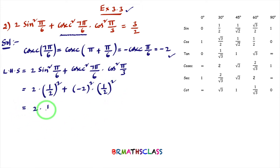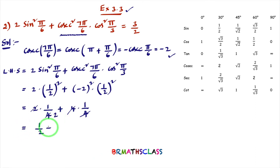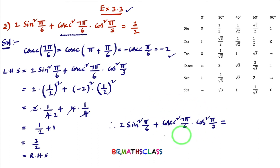Simplifying: 2 × (1/4) + 4 × (1/4) = 1/2 + 1 = 3/2. This 4 and 4 cancel in the second term, giving us 2 × 1/4 = 1/2, and 4 × 1/4 = 1. So 1/2 + 1 = 3/2, which is the RHS. Hence we proved the result.